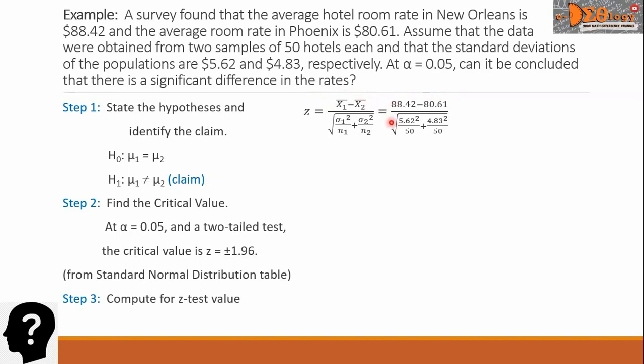All over the big square root of 5.62 squared over 50, plus 4.83 squared over 50.